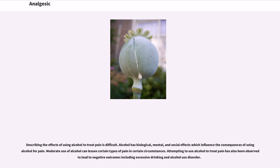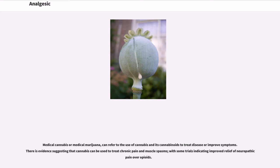Describing the effects of using alcohol to treat pain is difficult. Alcohol has biological, mental, and social effects which influence the consequences of using it for pain. Moderate use can lessen certain types of pain in certain circumstances, but attempting to use alcohol to treat pain has also been observed to lead to negative outcomes including excessive drinking and alcohol use disorder. Medical cannabis can refer to the use of cannabis and its cannabinoids to treat disease or improve symptoms, with evidence suggesting it can be used to treat chronic pain and muscle spasms, with some trials indicating improved relief of neuropathic pain over opioids.